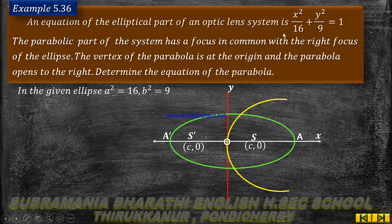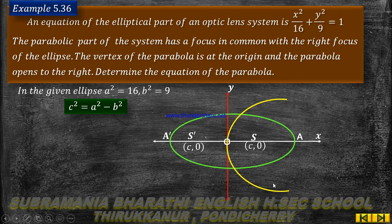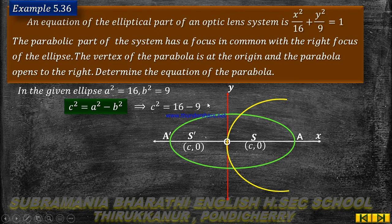So comparing the given ellipse equation with the general standard form, we find the values. Using the formula c squared equal to a squared minus b squared, we can find c. Substituting a squared and b squared values: c squared equal to 16 minus 9, so c squared equal to 7. Therefore c equal to root 7.